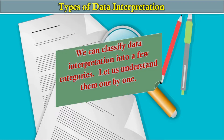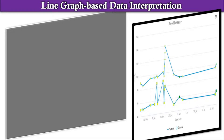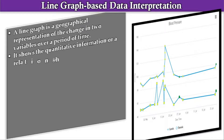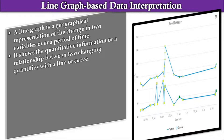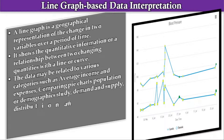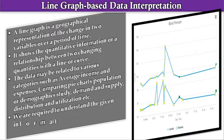We can classify data interpretation into a few categories. The first is line graph based data interpretation. A line graph is a graphical representation of the change in two variables over a period of time. It shows quantitative information related between two changing quantities with a line or curve. The data may relate to categories such as average income and expenses, comparing pie charts, population or demographic study, demand and supply, distribution and utilization, etc.